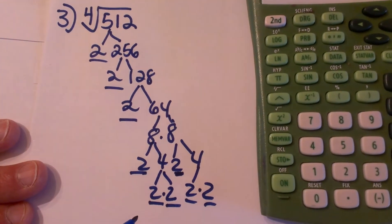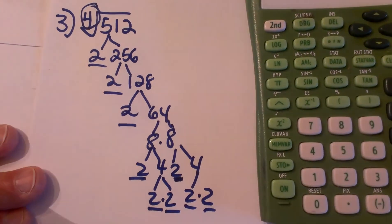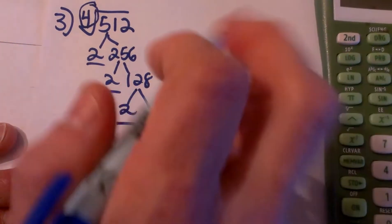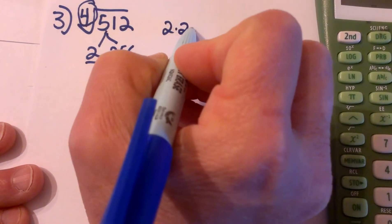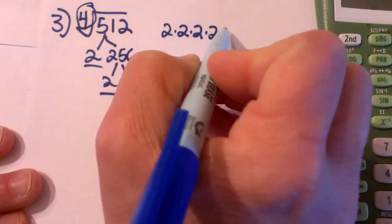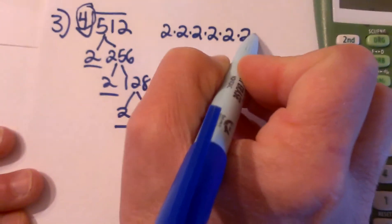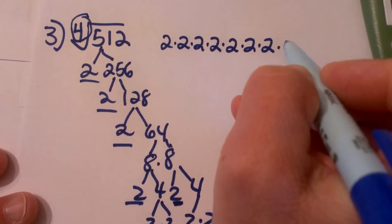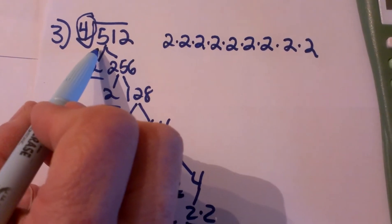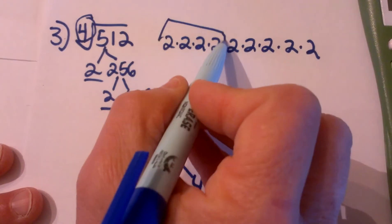Now I need to pair these up in groups of 4 because it is a fourth root. Okay, I am going to go over here and I am going to write all my 2's out since there are so many of these: 4, 5, 6, 7, 8. I have 9 of these and I need groups of 4, so let's group them in groups of 4.